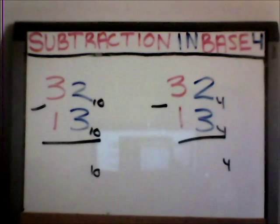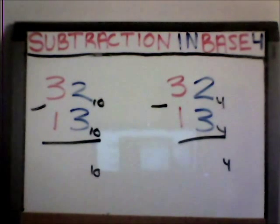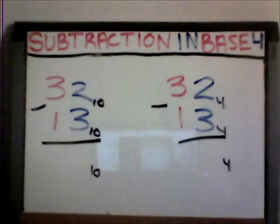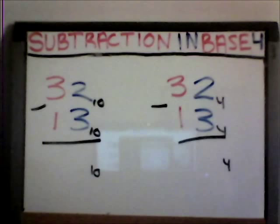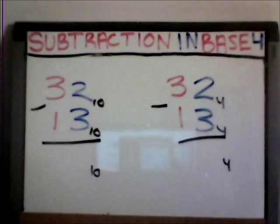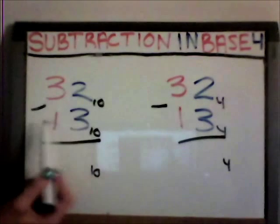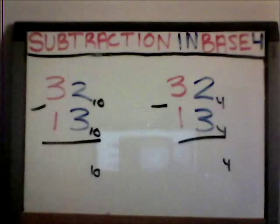Subtracting in base four is the same thing as subtracting in base ten. When a digit in the number you are subtracting from is smaller than the digit you are subtracting, then you must borrow from the next place value. For example, thirty-two base ten minus thirteen base ten.